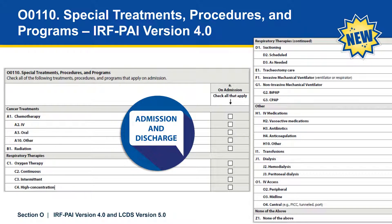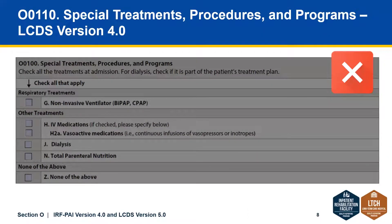Here is a screenshot of Section O. For the IRF-PAI, all of these are the same data elements that will be collected on admission and again at discharge. The admission items are collected in Column A, and the discharge items are collected in a column labeled Column C at discharge, but that is currently hidden by this screenshot. For the LTCH setting, here is what Section O used to look like. You'll see that this list has been expanded to include all of the items you just saw in the last screenshot for the IRF-PAI.